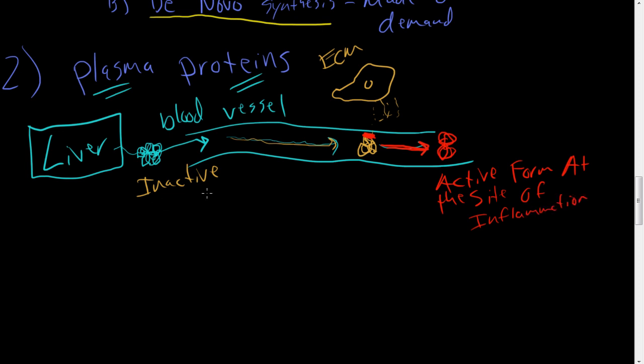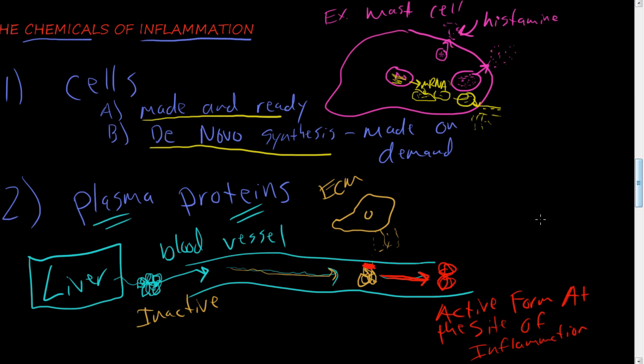So the inactive form that's in your plasma, inside your blood, that's getting constantly in your circulation, getting passed through all the parts of your body as your heart pumps the blood. When it finds, when it's triggered somehow, and we'll talk about the ways that it's triggered, it will turn into an active form of the protein at the site of inflammation.